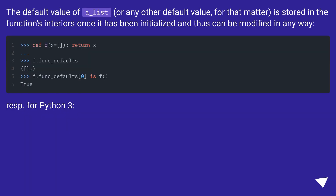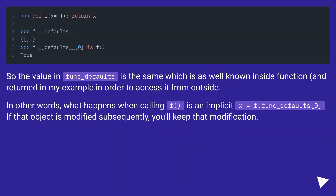The default value of `a_list`, or any other default value for that matter, is stored in the function's `__defaults__` once it has been initialized and thus can be modified in any way. For Python 3, the value in `func.__defaults__` is the same object as well known inside the function and returned in this example in order to access it from outside. In other words, what happens when calling `f` is an implicit `x = f.__defaults__[0]`. If that object is modified subsequently, you'll keep that modification.